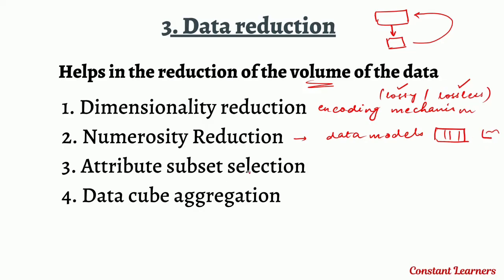Attribute subset selection means that in a table with multiple columns or attributes, we select only the attributes that are highly relatable and discard all the attributes that are not so important. Finally, data cube aggregation means summarizing the data we have collected to create a data cube, as discussed in the multi-dimensional database video.